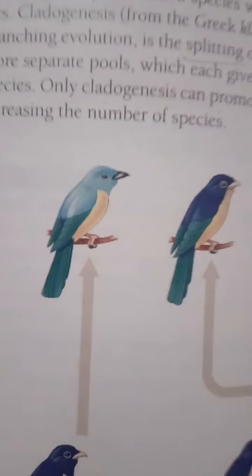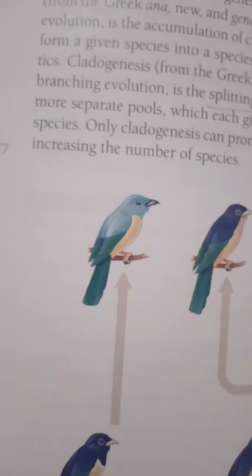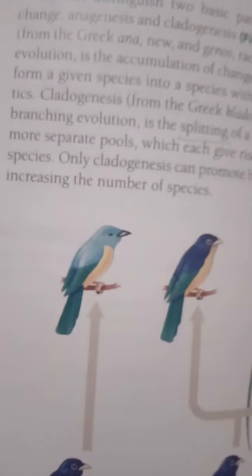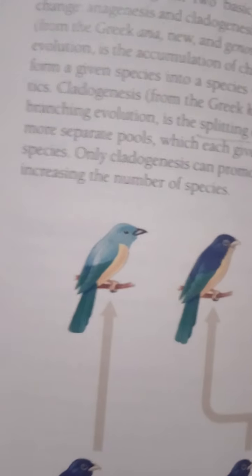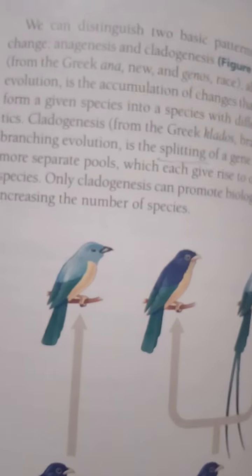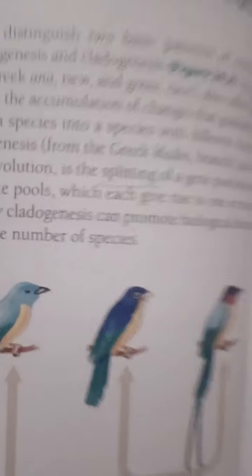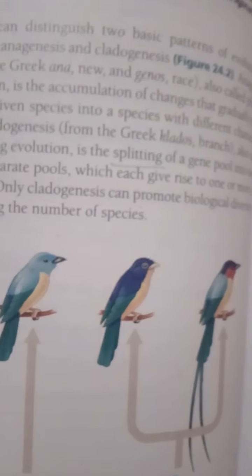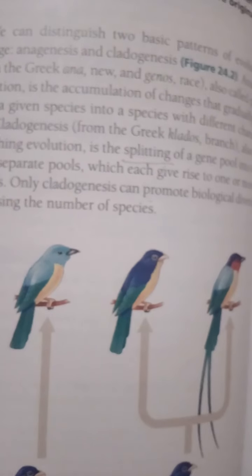These barriers can be classified according to whether they contribute to reproductive isolation before or after fertilization. Prezygotic barriers prevent mating between species or hinder the fertilization of eggs if members of different species attempt to mate. If a sperm cell from one species does overcome a prezygotic barrier and fertilizes an egg from another species, postzygotic barriers often prevent the hybrid zygote from developing into a viable, fertile adult.